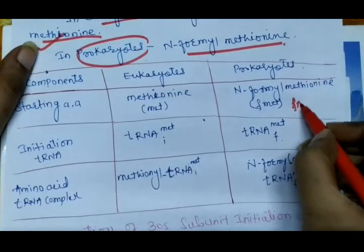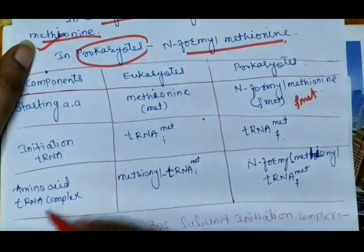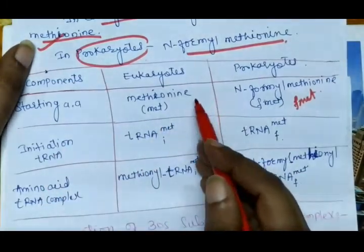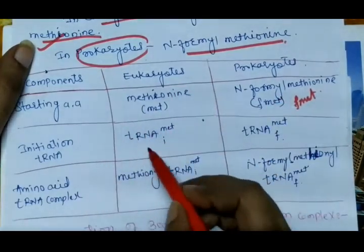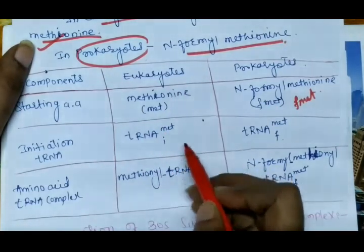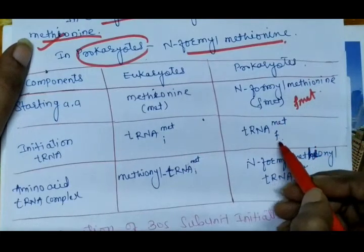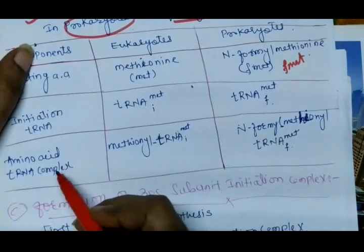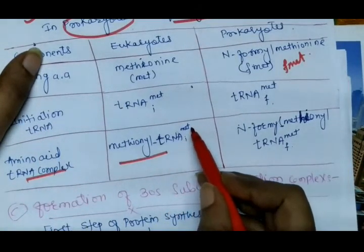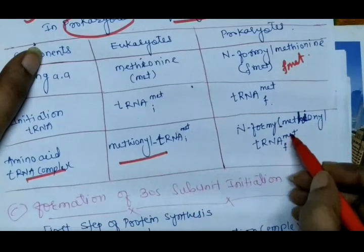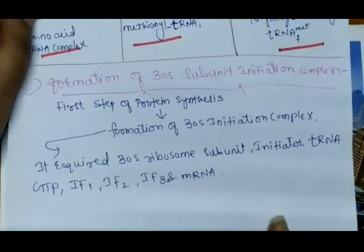The initiation tRNA is specific for its amino acid. In eukaryotes, the tRNA for methionine is abbreviated as tRNA-MET. In prokaryotes, it is abbreviated as tRNA-fMet. The complex of amino acid and tRNA is written as Met-tRNA for eukaryotes and fMet-tRNA for prokaryotes.